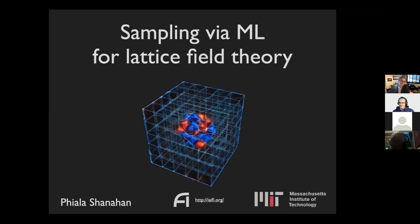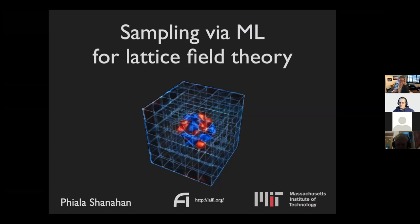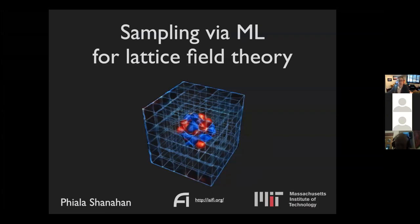Thank you very much, Philip. Thanks to the organizers for the invitation. It's an absolute pleasure to be here. In the spirit of this series at the intersection of physics and machine learning, my plan for this talk is to outline a particular computational challenge — a sampling problem — that stands between us and the ability to do some really exciting theoretical physics calculations, and then dig into the details of some new approaches to meet this challenge with machine learning, especially when we build the symmetries of our theory into our architectures from the ground up.